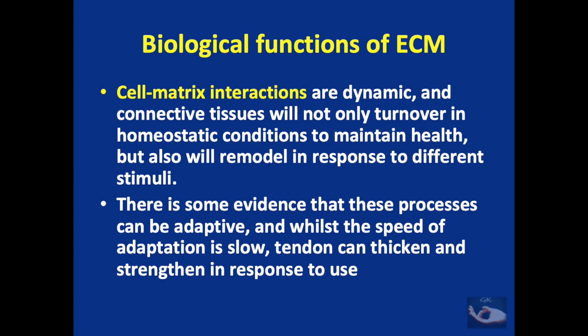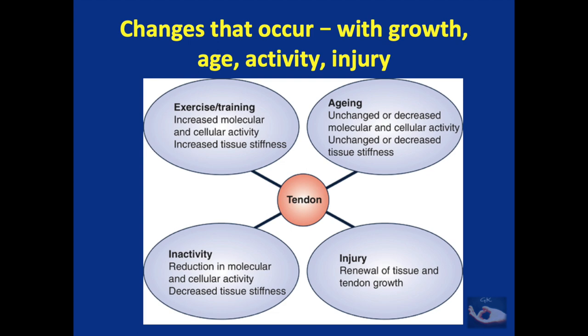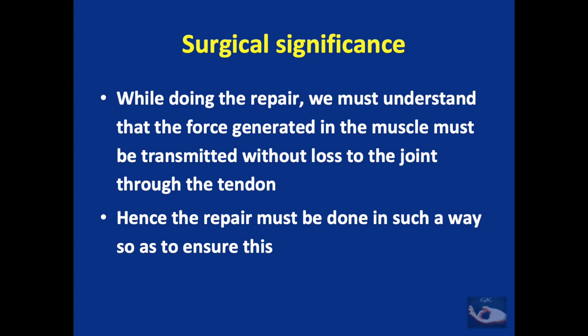The extracellular matrix also has biological functions pertaining to dynamic cell-matrix interactions, and there is evidence these processes can be adaptive. Tendon can thicken and strengthen in response to use, though the speed of adaptation is slow. The structure of the tendon can be modified by aging, injury, exercise training, and inactivity. While doing the repair, we must understand that the force generated in the muscle must be transmitted without loss to the joint through the tendon, and the repair must be done to ensure this.